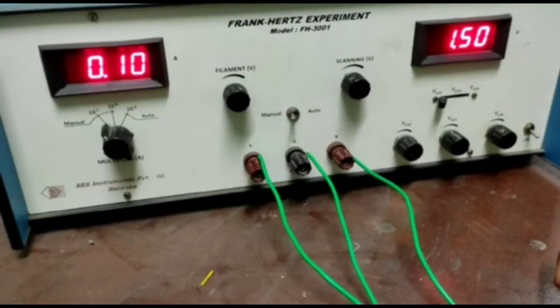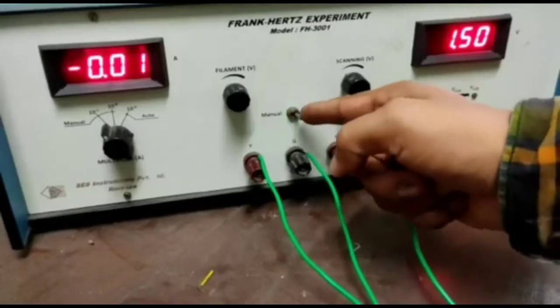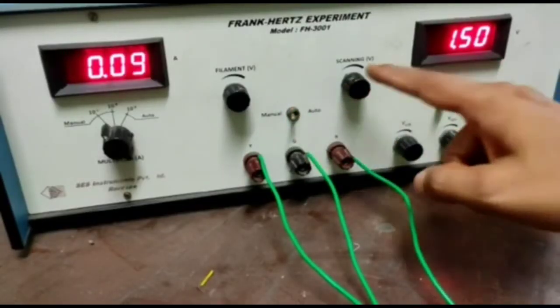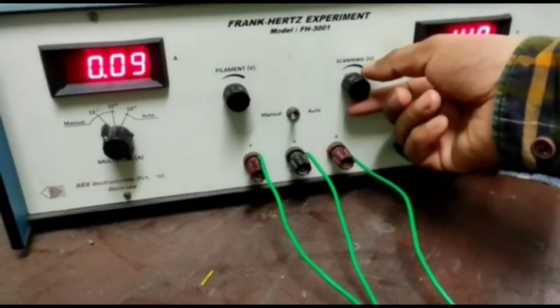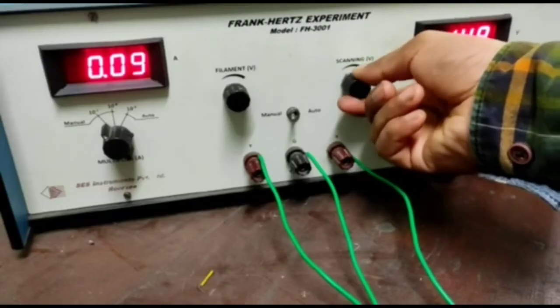Now, turn the manual switch. This is manual switch and this is auto. When you put it, this is auto. And when you put this knob here, this is manual. Turn the manual switch to the manual and check the scanning voltage. This is the scanning voltage. Check the scanning voltage knob is at minimum position.